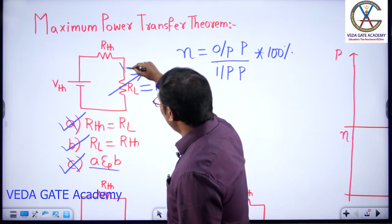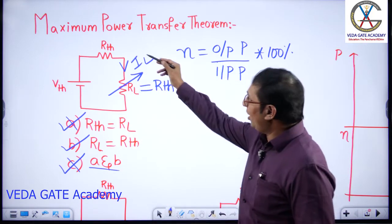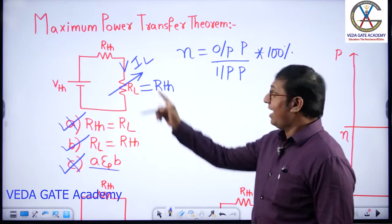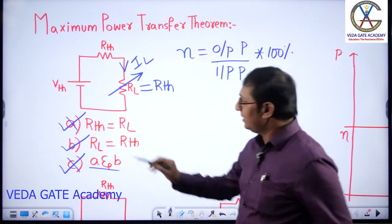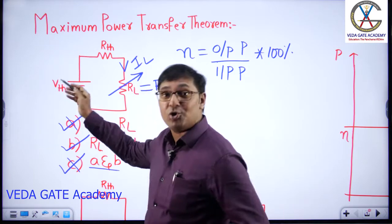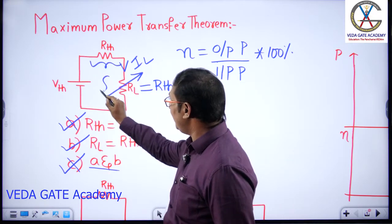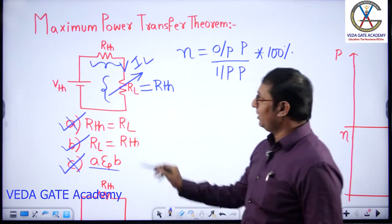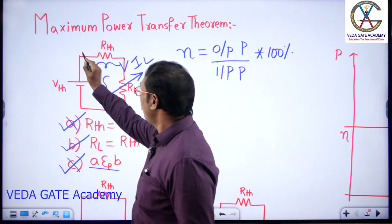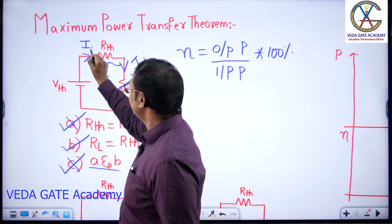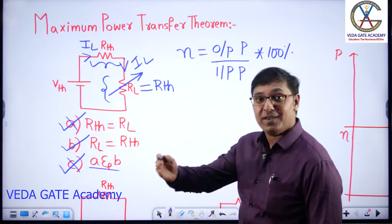In this circuit, some load current IL is flowing. What is the power absorbed by the load? IL squared times RTH. For input power, as per KCL, the same current IL flows through the source resistance — so power absorbed by that resistor is also IL squared times RTH.